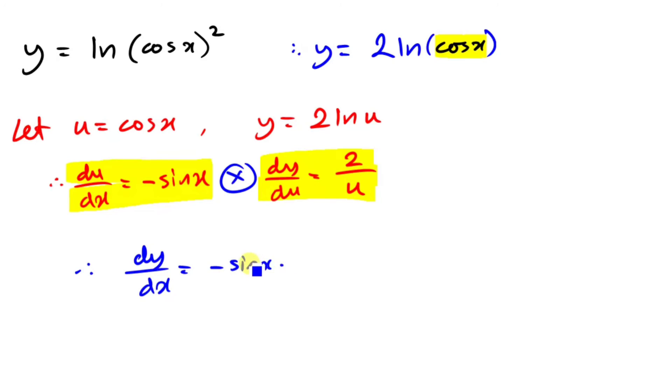So we just write that down, minus sin x times 2 over u. And well, we know what u is. u is literally just cos x. So now we're going to have, I'm going to put the 2 in front, minus 2 sin x over cos x. And that's it.